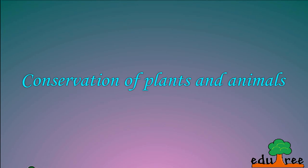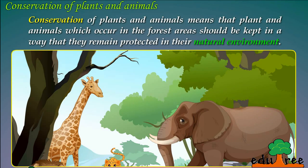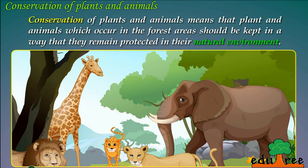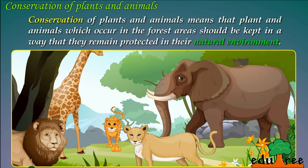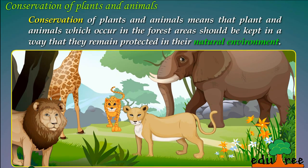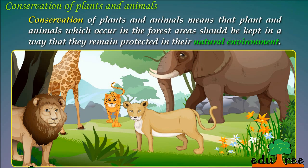Conservation of Plants and Animals means that plants and animals which occur in the forest areas should be kept in a way that they remain protected in their natural environment.